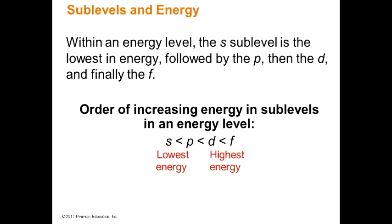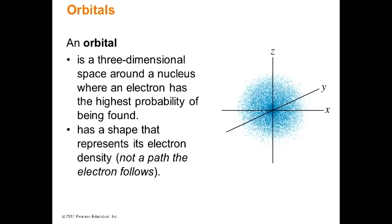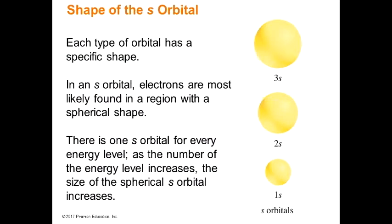Now, orbital diagrams. We have S, P, D, and F blocks. You can put 2 electrons in S, 6 in P, 10 in D, and 14 in F. The Pauli exclusion principle says that when you put electrons into an orbital, a maximum of 2 can go in, and they don't like to go in the same way — one points up and one points down. You never draw both electrons pointing the same direction. One up, one down — that's it.